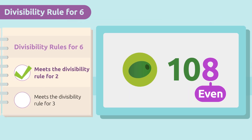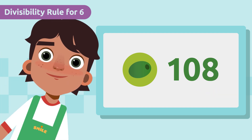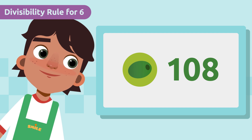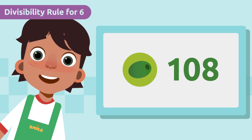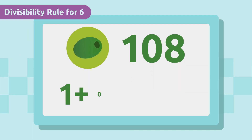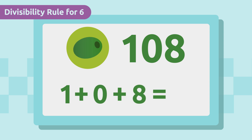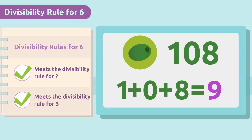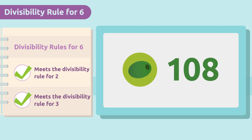Now let's check the rule of three. As Connor explained, to find out if a number is divisible by three we first have to add its digits. Our result is nine, and since nine is divisible by three, the number 108 is divisible by both two and three.